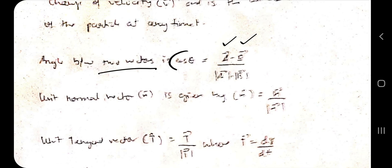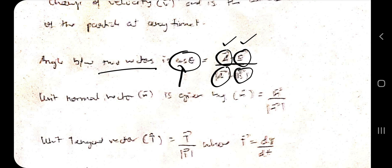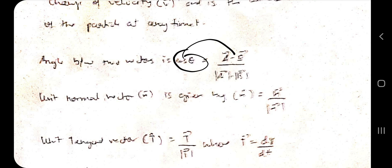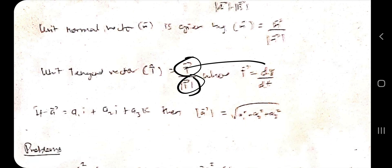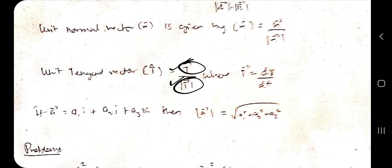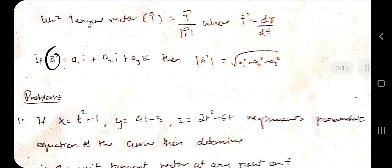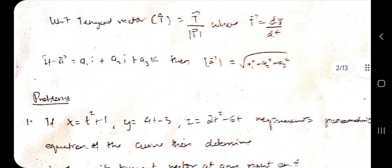To find the angle between two vectors a and b, use cos θ = (a · b) / (|a| |b|), then take cos inverse to get θ. The unit normal vector is the normal vector divided by its magnitude. Similarly, the unit tangent vector is the tangent divided by its magnitude, where the tangent is the derivative of the position vector with respect to t. If a = a₁i + a₂j + a₃k, then |a| = √(a₁² + a₂² + a₃²).